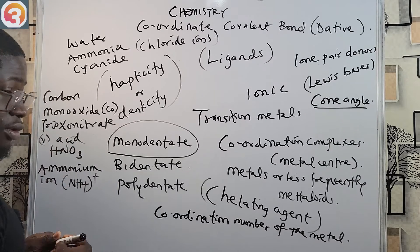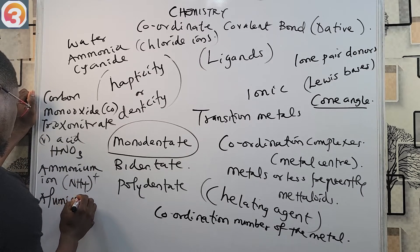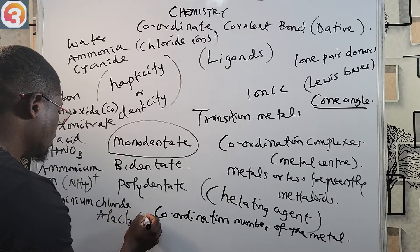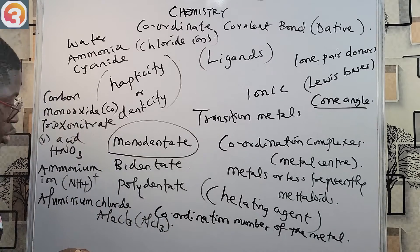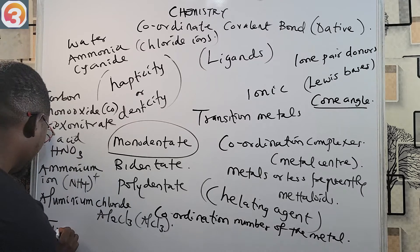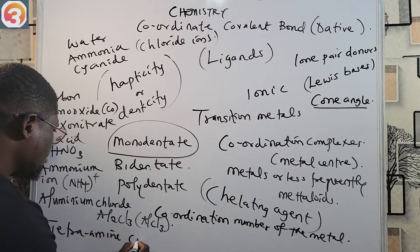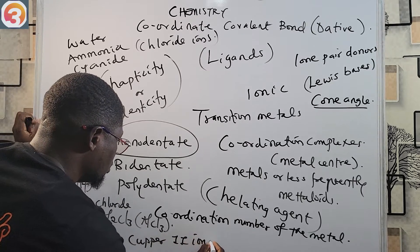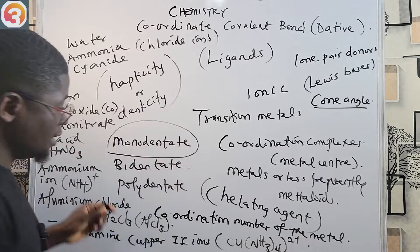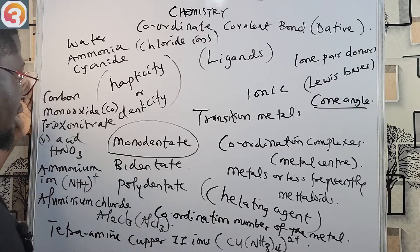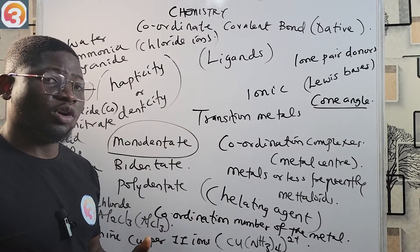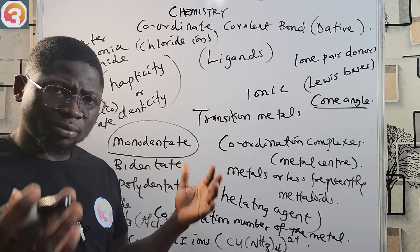Other examples of dative species include aluminum chloride (Al₂Cl₆ or AlCl₃), which exists as a dimer, and tetramine copper(II) ions — [Cu(NH₃)₄]²⁺. So examples of dative species are: carbon monoxide, nitric acid, ammonia ion, aluminum chloride, and tetramine copper(II) ions.